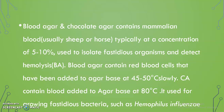Blood agar and chocolate agar contain mainly mammalian blood — sheep or horse blood can be used; 5 to 10% blood is added. Blood agar contains RBCs that have been added to agar base at 45 to 50 degrees Celsius very slowly. Chocolate agar contains blood added to agar base at 80 degrees Celsius. It is used for growing fastidious bacteria such as Haemophilus influenzae.